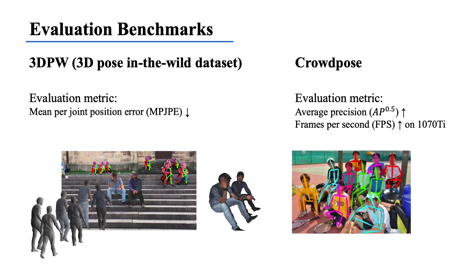We perform quantitative and qualitative experiments to measure how ROMP performs in comparison to previous methods. We evaluate ROMP on the challenging in-the-wild 3DPW and CrowdPose benchmarks. On 3DPW, we report the mean per-joint position error between the ground truth and the estimated 3D pose in millimeters. On CrowdPose, we report the average precision between the ground truth and the 2D projection of the predicted 3D pose, and the frame rate on a 1070 Ti GPU.